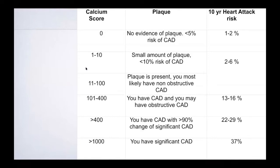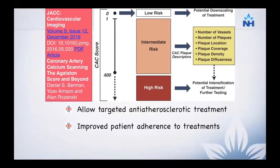If you look at the calcium score and the 10-year heart risk, the Agatston score gives you a decent estimate of likelihood of developing coronary artery disease. But most of these data are Caucasian-based data, and there is very little or no data available for the Indian population. If you apply the coronary artery calcium score to standard risk factors such as Framingham risk factors, there is significant potential for intensification of treatment.